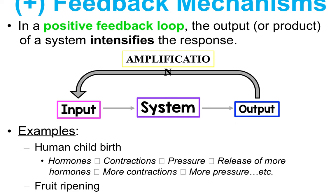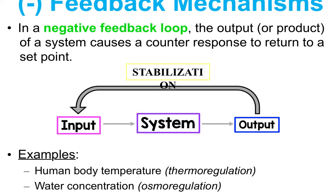This is why when you're looking for strawberries at the grocery store, if you pick up one box and it's super moldy, chances are everyone's moldy — because they've already communicated through ethylene gas on the way to the store. Negative feedback is when the output of a system produces a counter-response, returning back to the system. We call that stabilization.